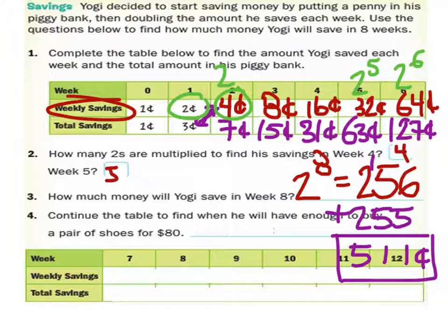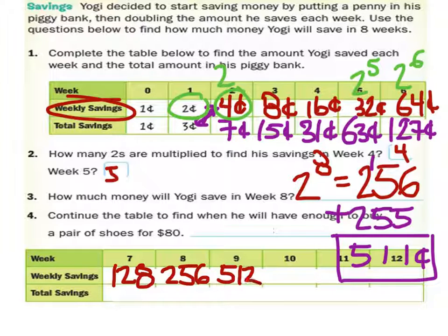Well, let's just continue the table then. So in week seven, you'd have 128. Week eight would be 256, which is what we found. And 512, very good. One thousand twenty-four, two thousand forty-eight.